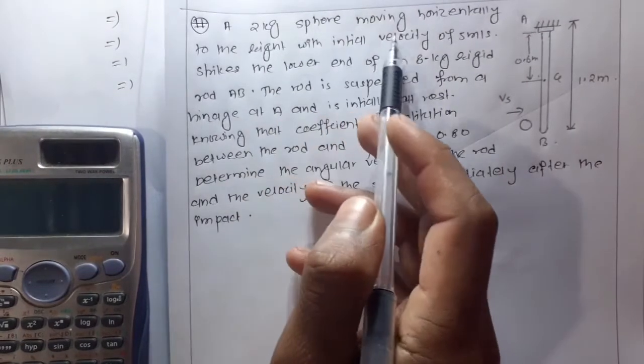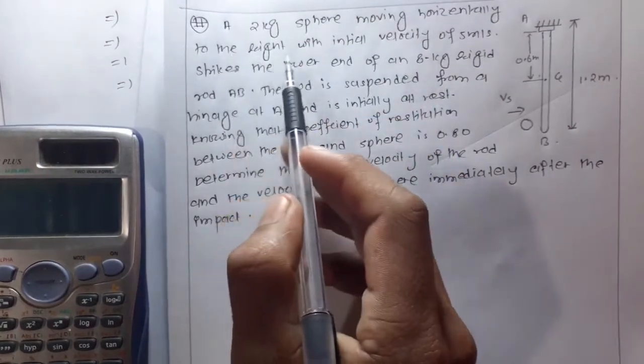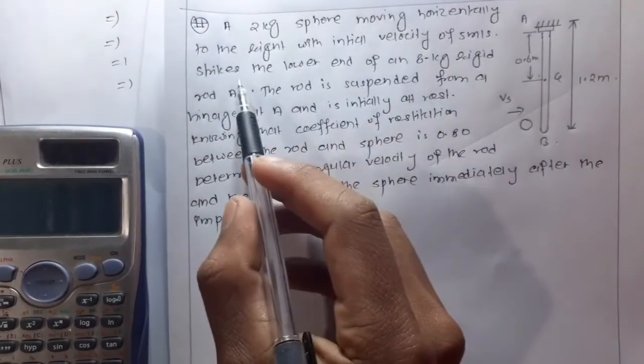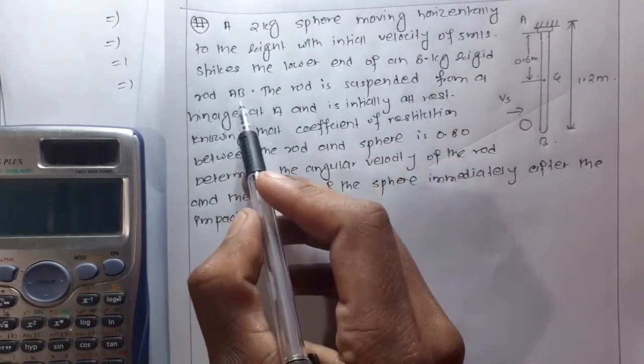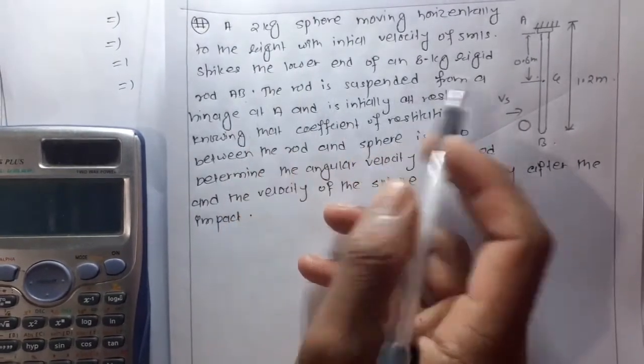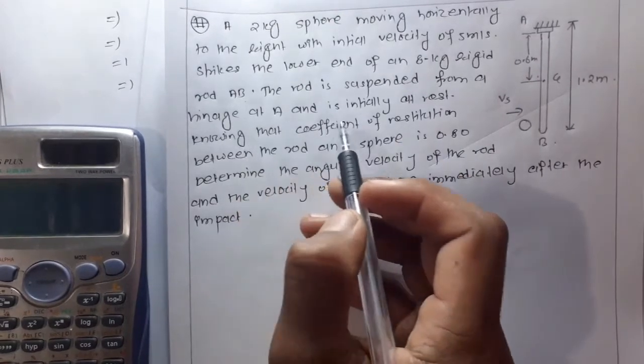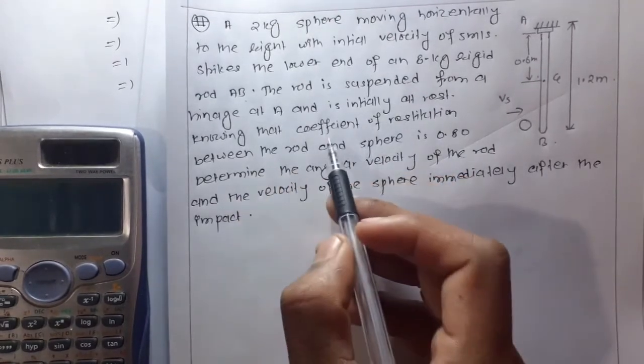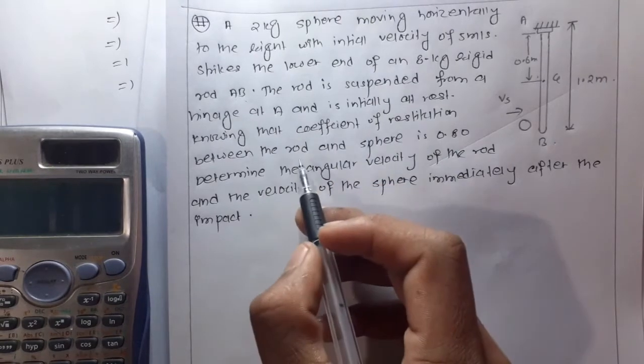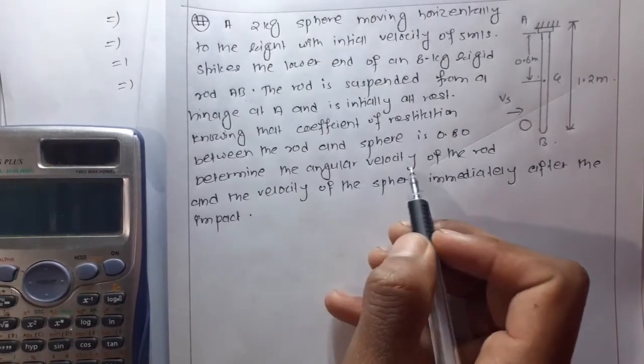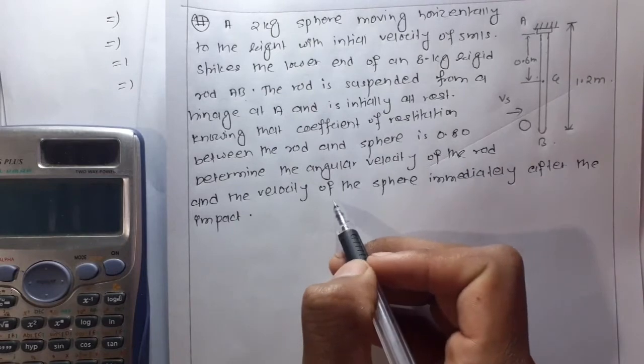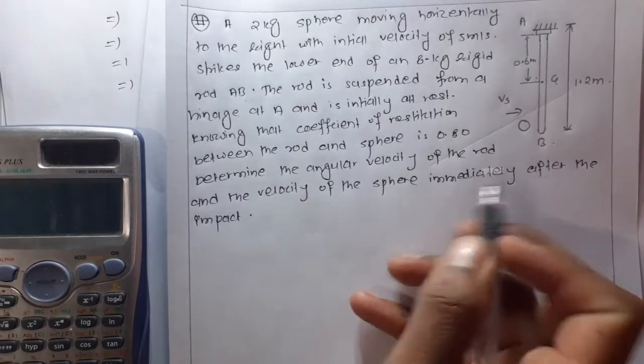The question is: a 2 kg sphere moving horizontally to the right with initial velocity of 5 m per second strikes the lower end of an 8 kg rigid rod AB. The rod is suspended from a hinge at A and is initially at rest, knowing that the coefficient of restitution between the rod and the sphere is 0.8, determine the angular velocity of the rod and the velocity of sphere immediately after the impact.